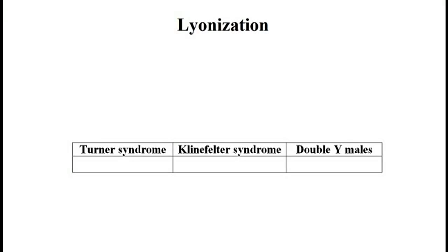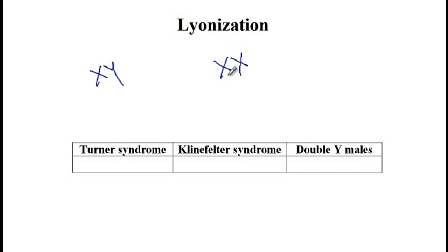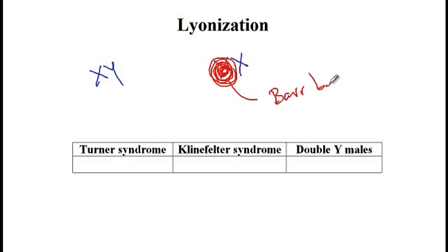Lyonization is the process through which X chromosomes become inactive and form the Barr bodies. As you know, the genotype of males is XY and the genotype of females is XX. Females have an extra X chromosome, and in order for gene expression to be balanced, one of these X chromosomes in females will undergo Lyonization, which means that it becomes inactive and forms the Barr body.